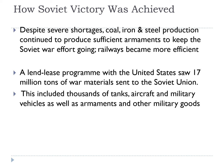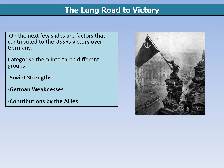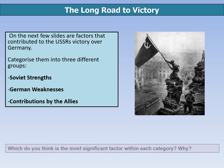Over the next couple of slides we're going to look at the factors that contributed to the USSR's victory over Germany — this could be a potential essay topic. You're going to categorise them into three areas: Soviet strengths, German weaknesses, and the contribution of the Allies. You can do this as headings with bullet points, a table with three columns, or three mind maps — it's up to you. Within each category, decide which factor you think is the most significant and why, and then decide which of the three is most significant overall.